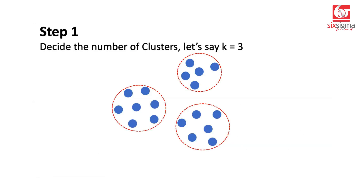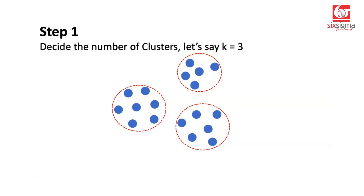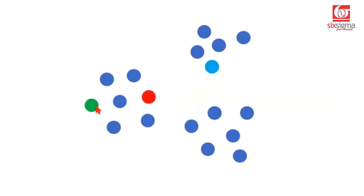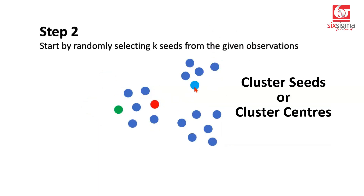Let's say we know the number of clusters we eventually want. Step two is that we begin by selecting some of these points randomly as the cluster seeds, or cluster centers. This will be a random selection from within the points provided to us. So we selected this point — the green one, the red one, and this blue one here. These are our randomly selected cluster seeds or cluster centers.